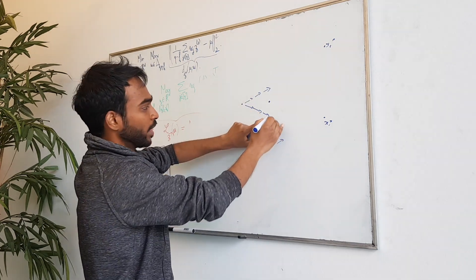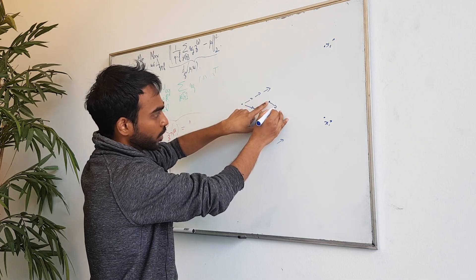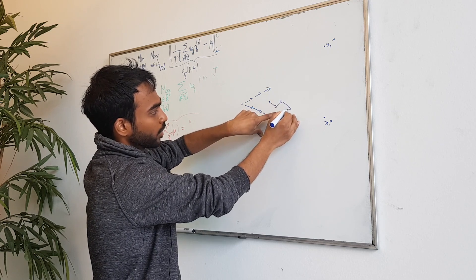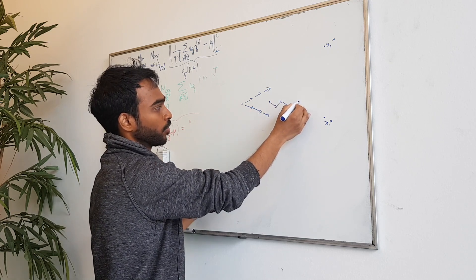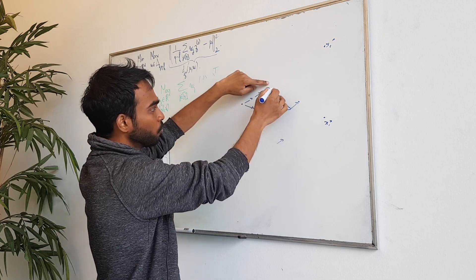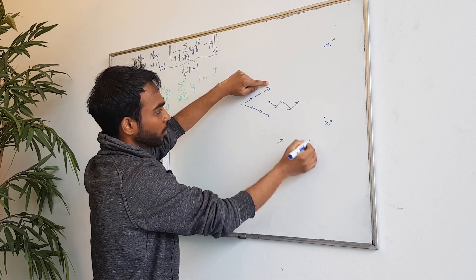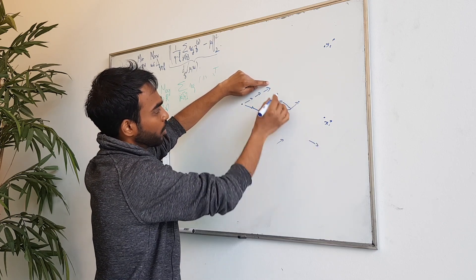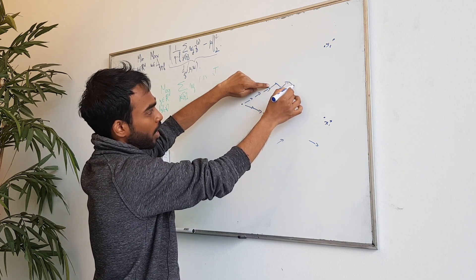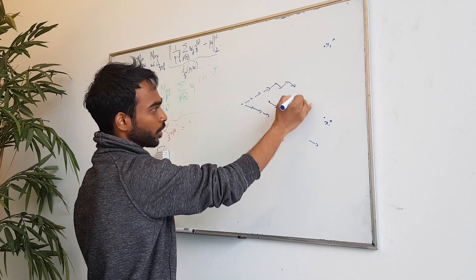Machine one now knows that x2 tends to move in this direction. So in the next round, it will take its gradient step and then add this correction — take its gradient step, add its correction, and so on, and now it goes there. Similarly, machine two will see that the updates of machine one tend to go in this direction, so it will take its step, add its correction, take its step, add its correction, and now it goes here.